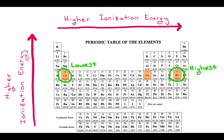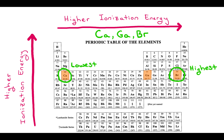To list those elements in increasing ionization energy: calcium, then gallium, then bromine. So it's easiest to rip an electron off of calcium, and hardest to rip an electron off of bromine.